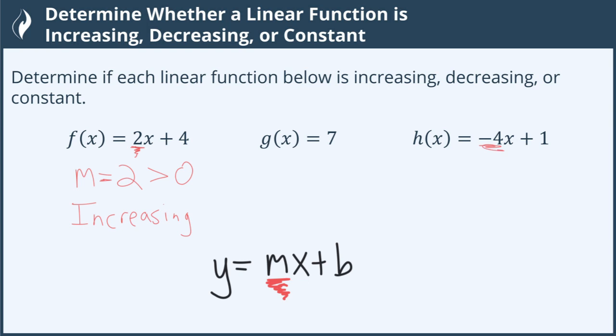For h of x, which is this one down at the end, we have negative 4 as our slope. Negative 4 is negative, which is less than 0. Less than 0 means that we're decreasing.